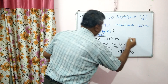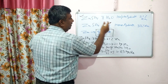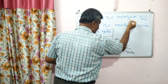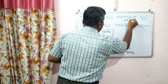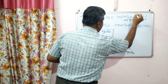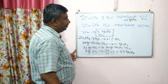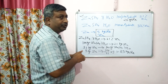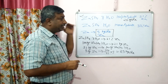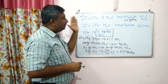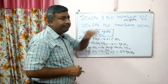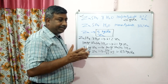So this zinc sulphate heptahydrate requirement is approximately 25 kg per hectare. This is the soil application rate at the time of basal application, at the time of sowing — heptahydrate is applied at the rate of 25 kg per hectare.